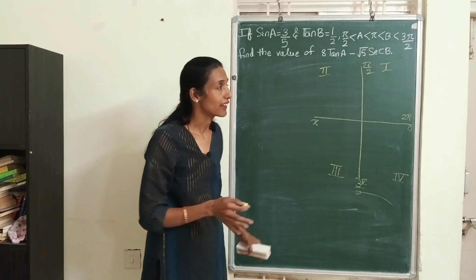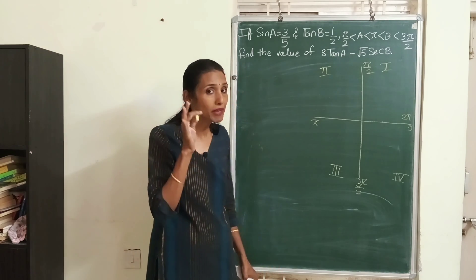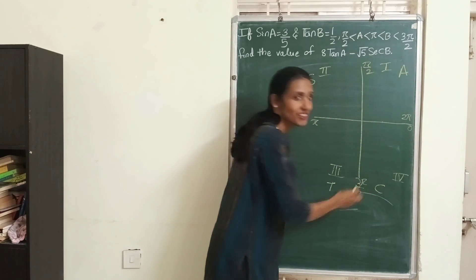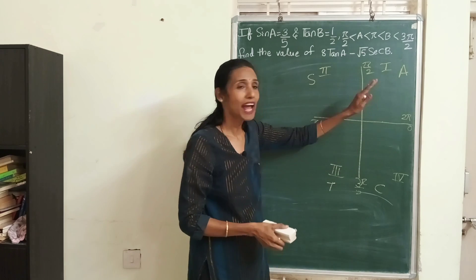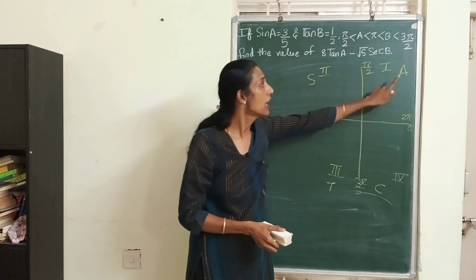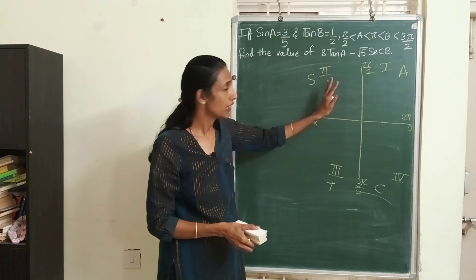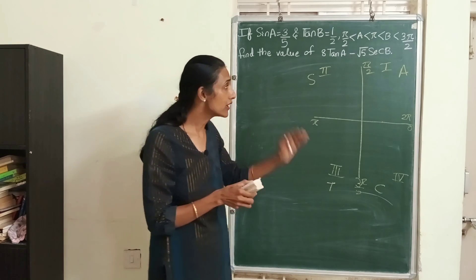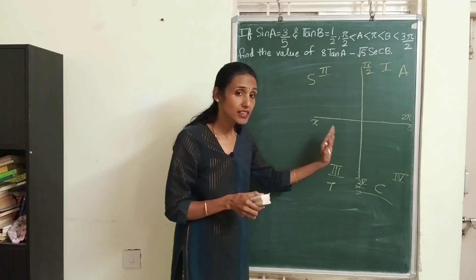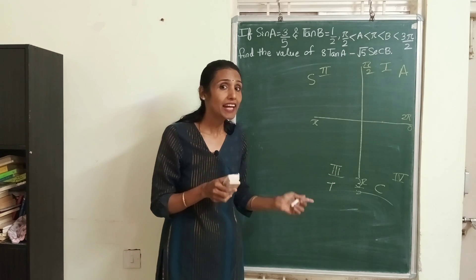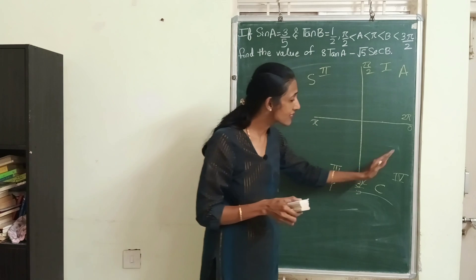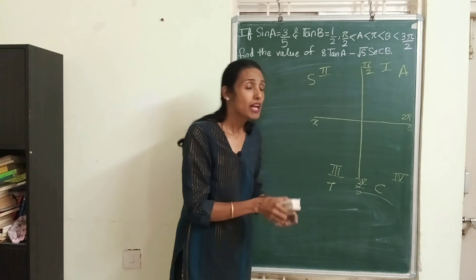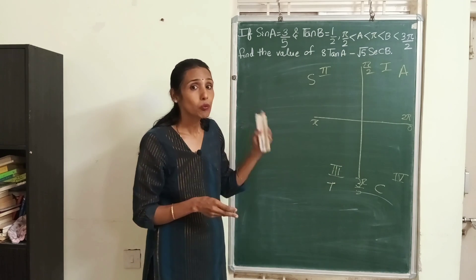If your angle is an acute angle, then all the trigonometric ratios are going to be positive. Do you remember 'All Silver Tea Cups'? That's a good way of remembering this rule. If your angle is in the second quadrant, only sin and its reciprocal cosec are positive. In the third quadrant, only tan and cot are positive. In the fourth quadrant, only cos and its reciprocal sec are positive.